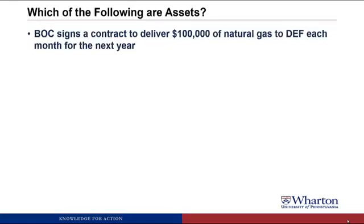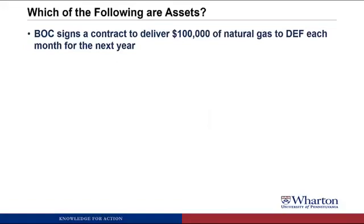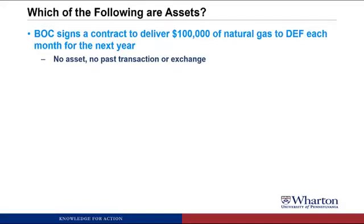Next, BOC signs a contract to deliver $100,000 of natural gas to DEF each month for the next year. This one will not be an asset because there's been no past transaction or exchange. Every exchange of cash, goods, or services is going to happen sometime in the future. Nothing has been exchanged yet, so there can't be an asset for it.